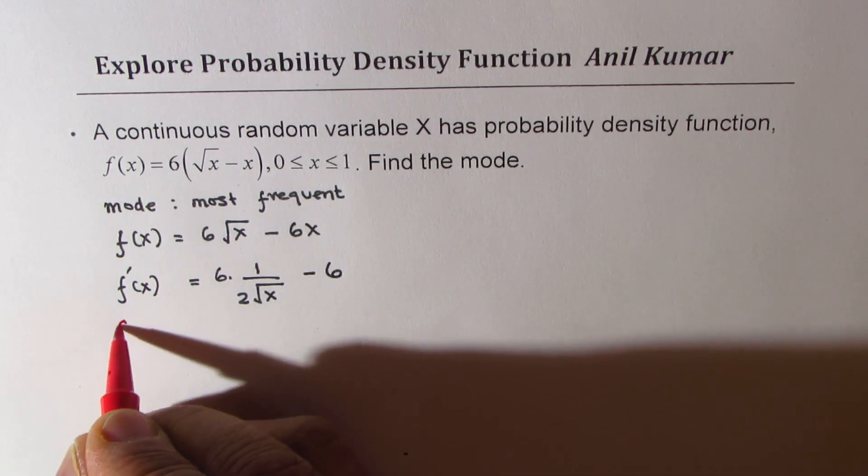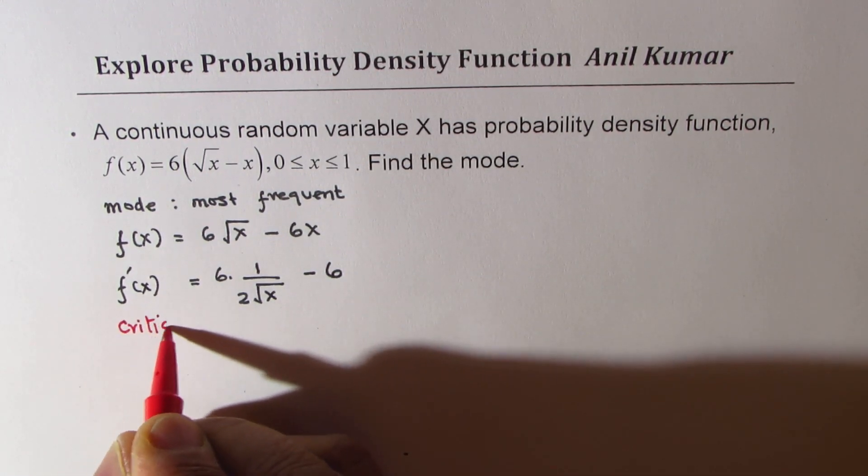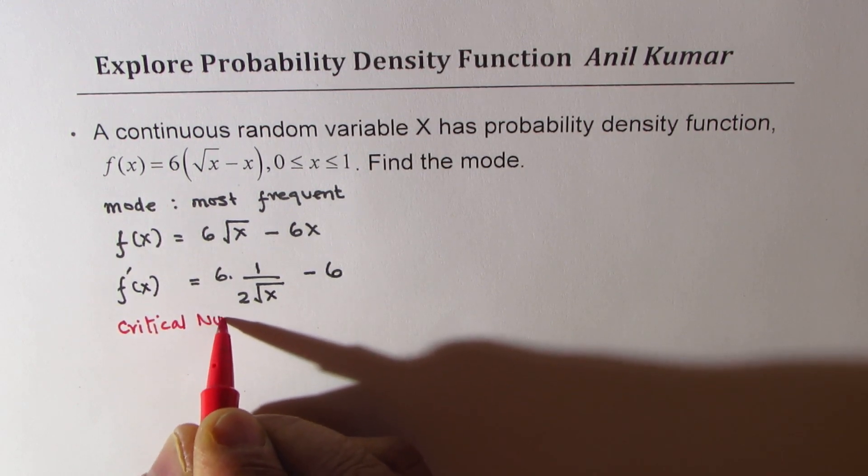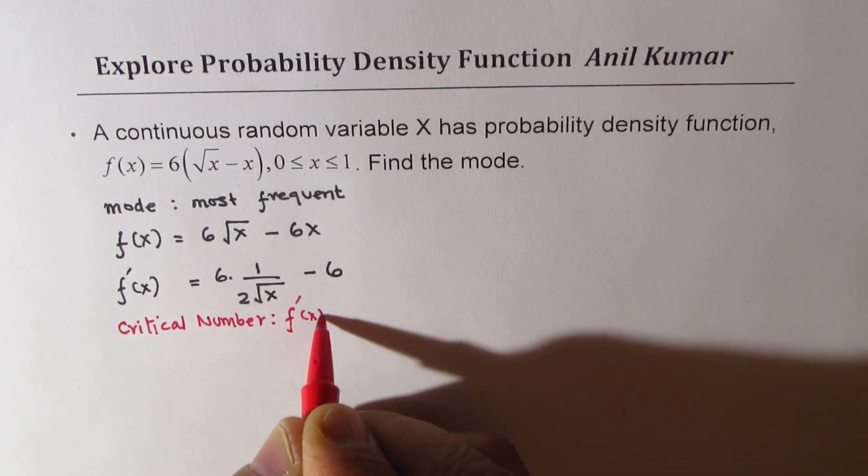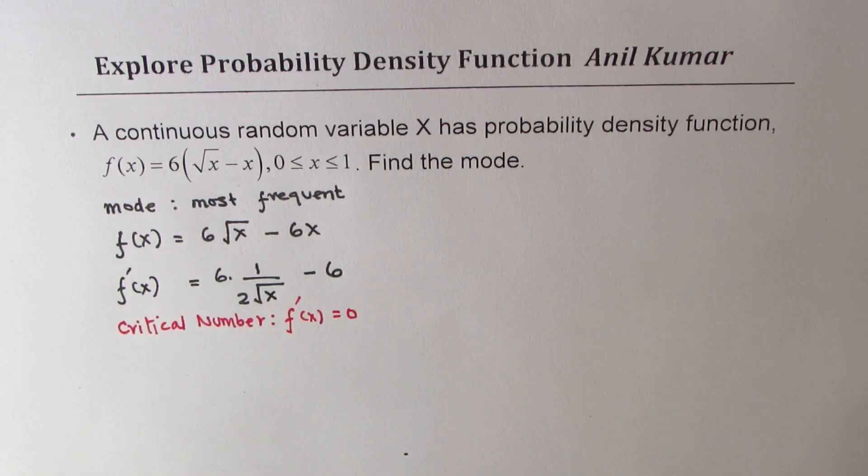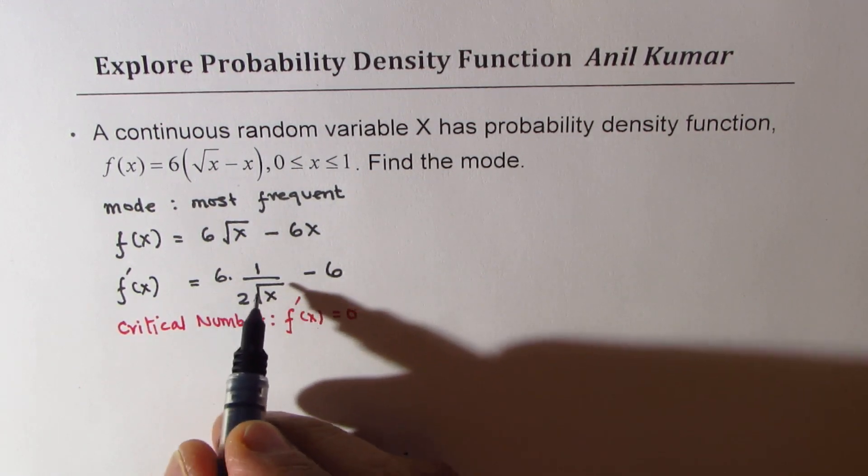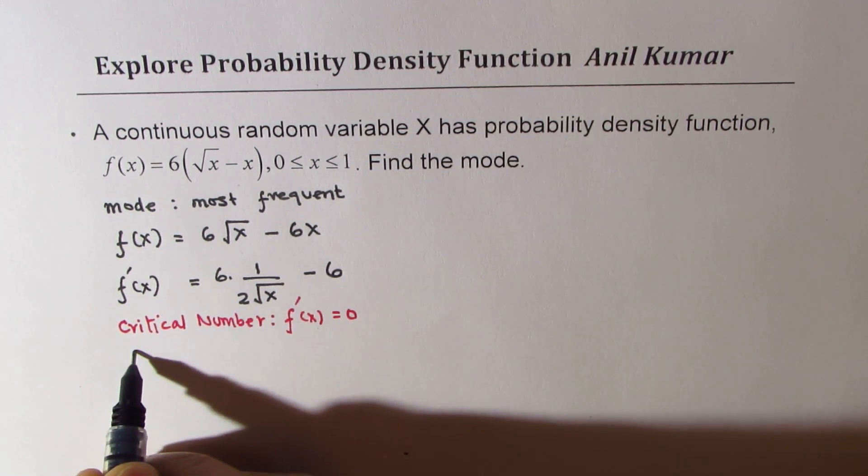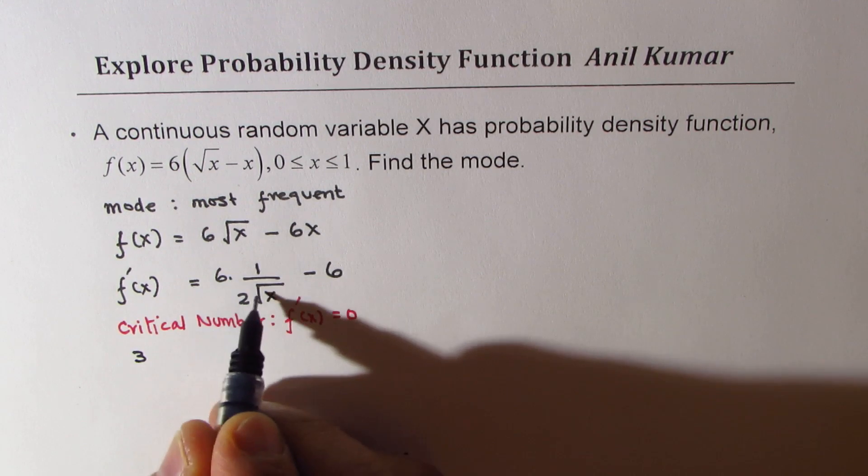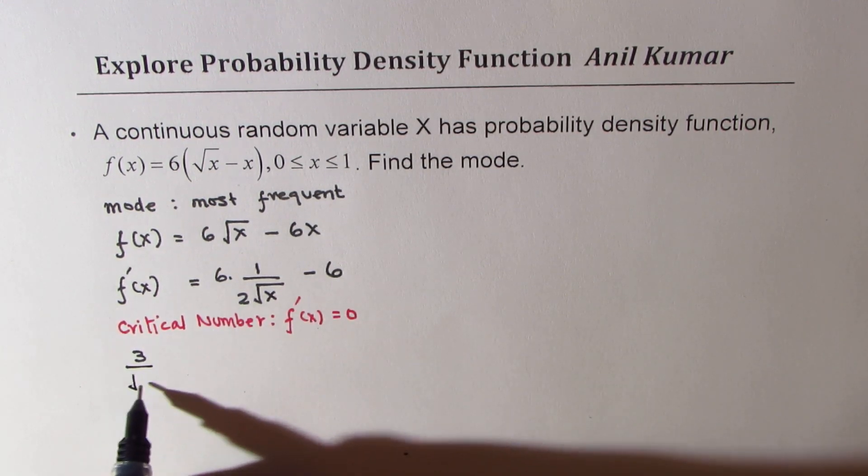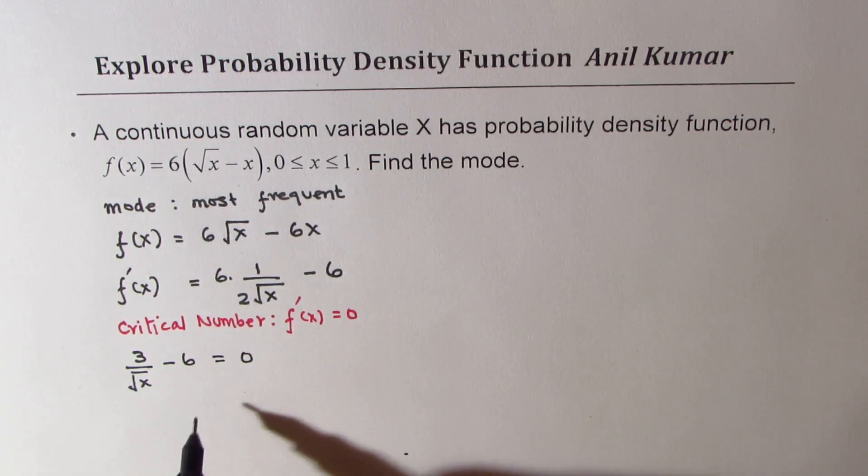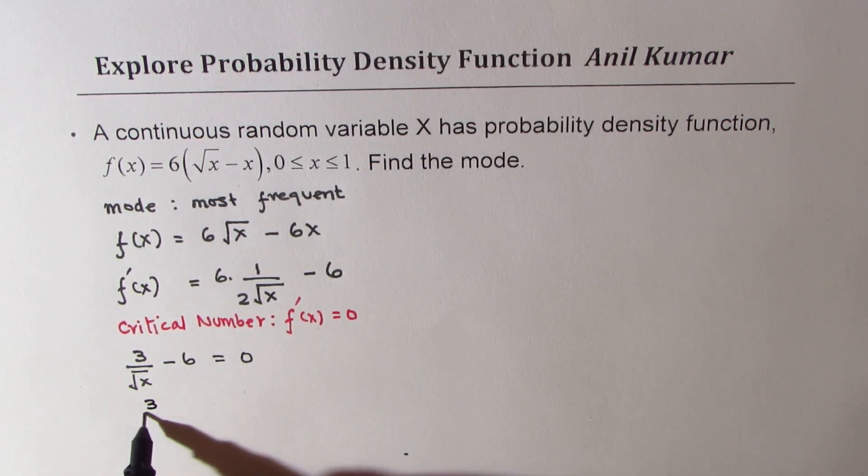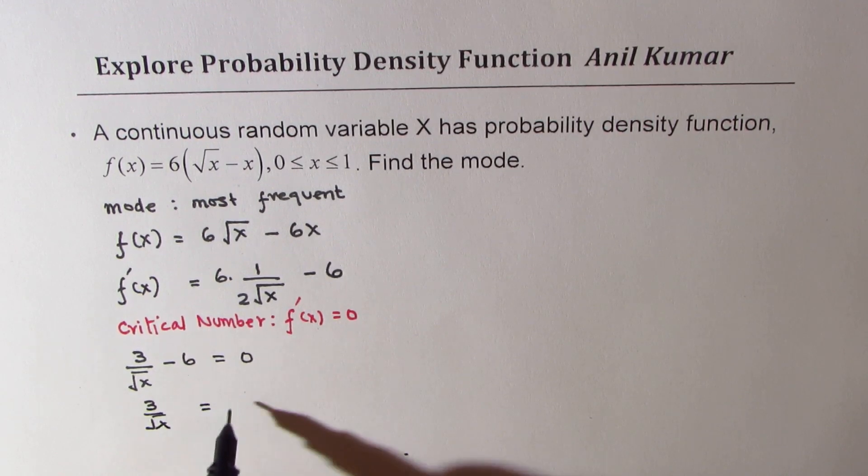Now let's find the critical number, that is when the derivative equals 0. Equating this to 0, we could write this as 3 over square root x minus 6 equals 0. So that gives us 3 over square root x equals 6.